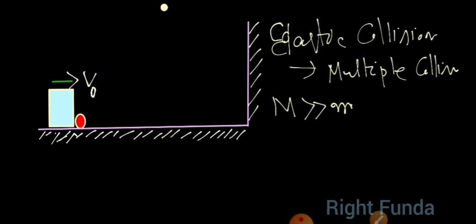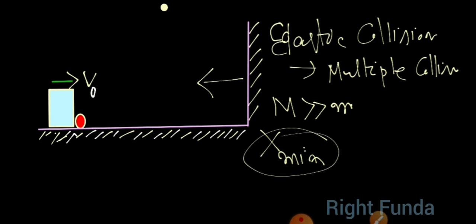There is a minimum distance separation x_min between the block and the wall. This minimum distance occurs when the block comes to rest, because relative to the stationary wall, the closest approach happens at that instant.